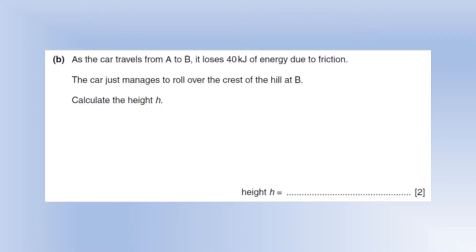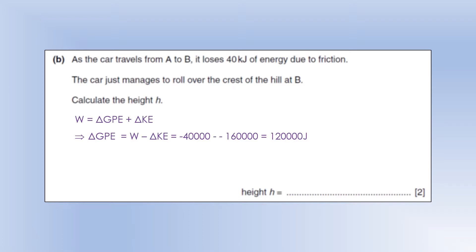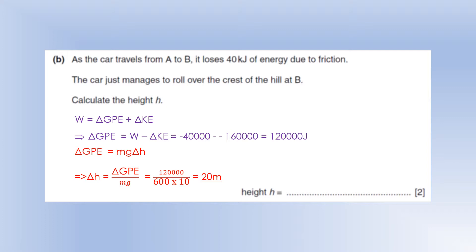As the car travels from A to B, it loses 40 kilojoules of energy due to friction. The car just manages to roll over the crest of the hill at B — calculate the height. To get the change in GPE, we take the work done against friction, minus 40,000 joules, and subtract the change in kinetic energy, which is also negative. We end up with a difference of 120,000 joules. Rearranging for the change in height, we find the car goes upwards by 20 metres.